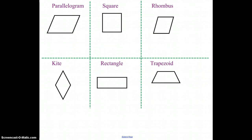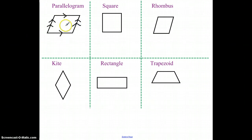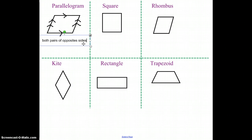Let's talk about the six specific kinds and their properties. A big focus of the quadrilateral section has to do with parallelograms. Parallelograms are four-sided figures that have two pairs of opposite sides that are parallel. The arrows are used to show parallel — ones with one arrow are parallel to each other, and ones with two arrows are parallel to each other. Both pairs of opposite sides are parallel.